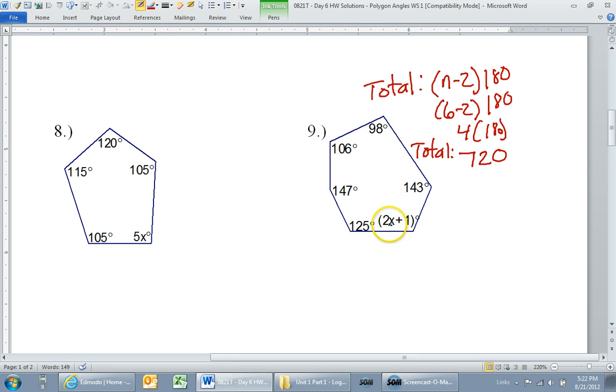So look, I'm always looking for like terms, but 2x is the only x term that we've got. So I'm going to start with 2x. Now, the rest of these, the 125, 147, 106, 98, 143, and the 1, all of those are like terms that need to be added. Don't forget the 1.